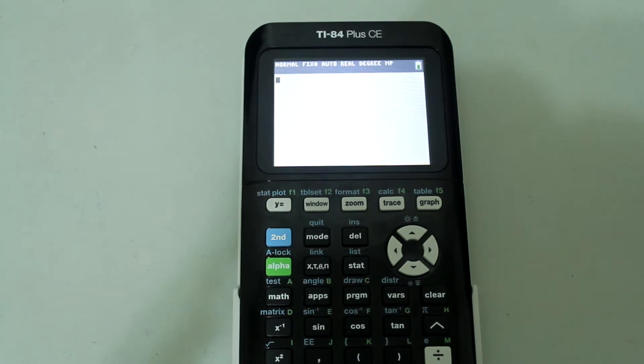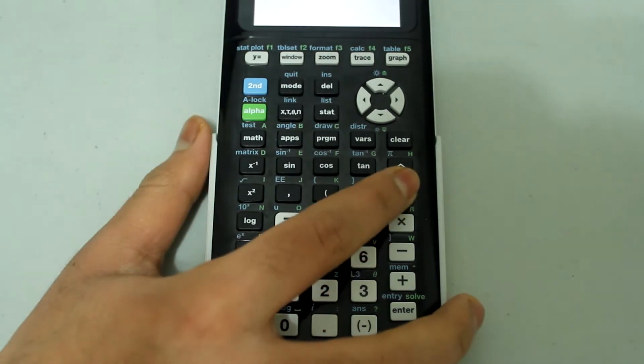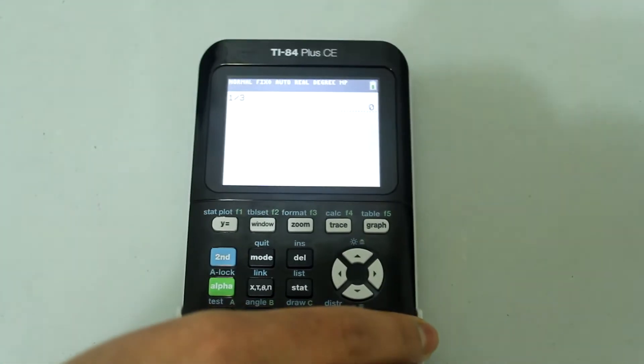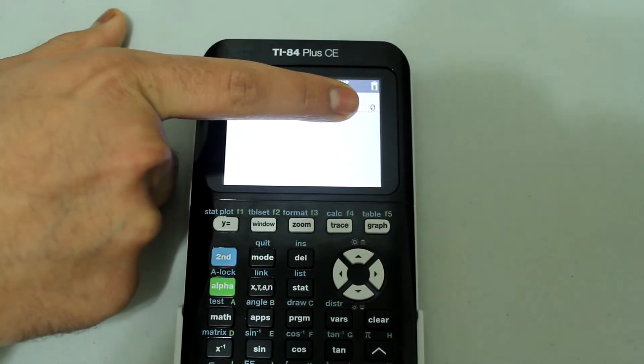So without further ado, let's get to it. Right now if I try to compute 1 divided by 3, so I'll type in 1, divide 3, and press enter, the calculator returns an answer of 0.